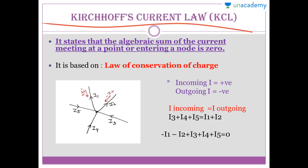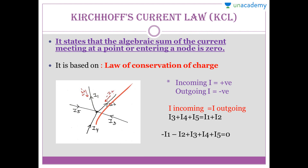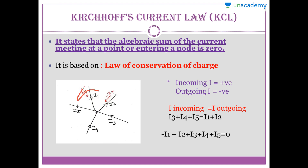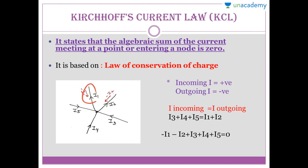What is Kirchhoff's Current Law, known in short as KCL? Its statement says that the algebraic sum of the currents meeting at a point or entering a node is zero. So whatever currents are entering our node, their algebraic sum is zero. We can write i2 as minus i2 and i1 as minus i1 when showing them in the entering direction.